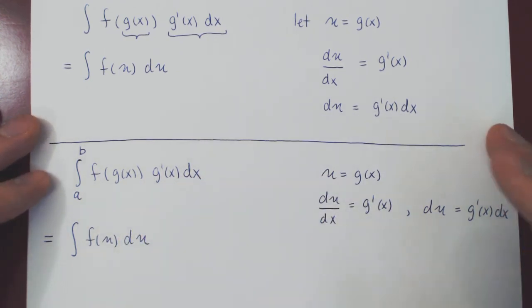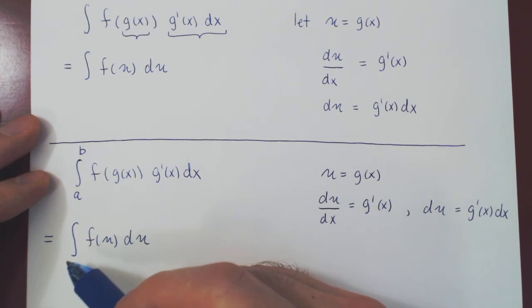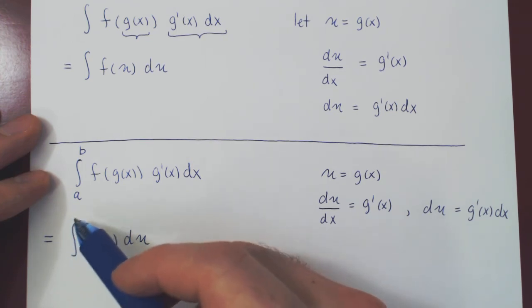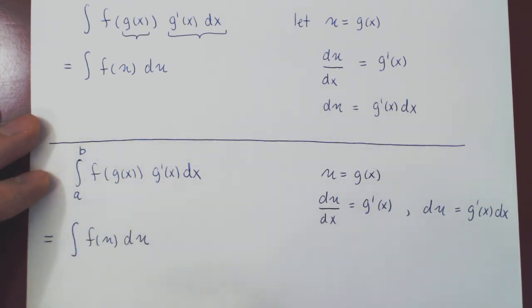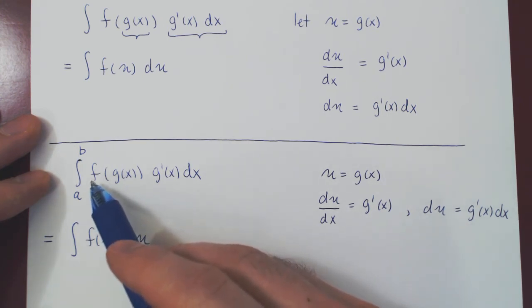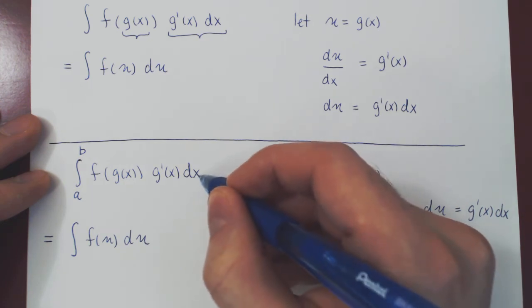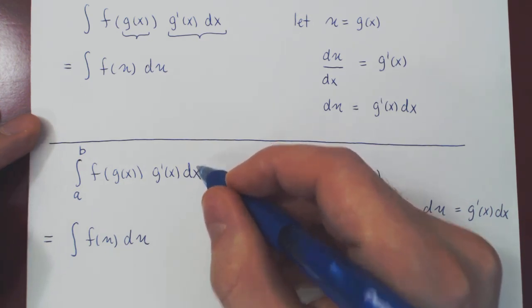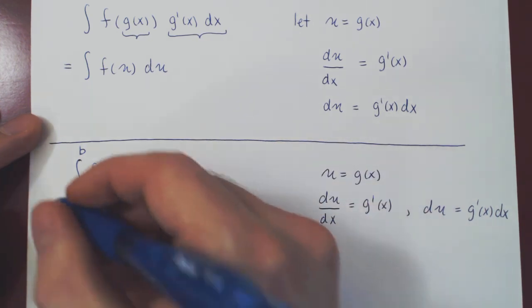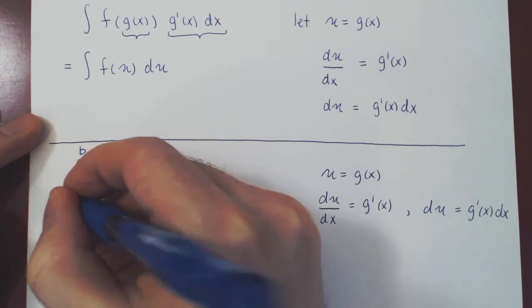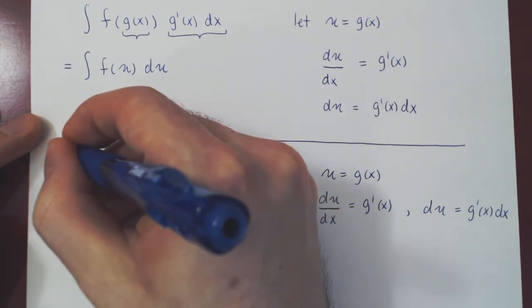But here's where you have to be careful. You may ask, are the new bounds of integration the same as the original bounds of integration? And the answer is no. And you have to be careful. Since we are integrating here with respect to the variable x, implicitly this is saying x is equal to a and x is equal to b.